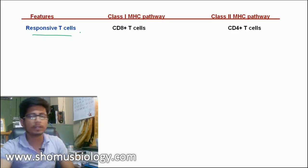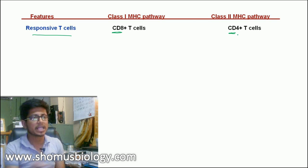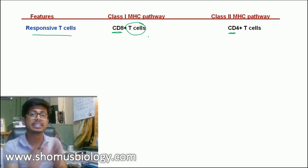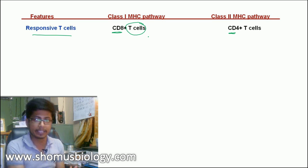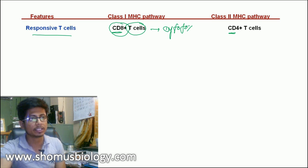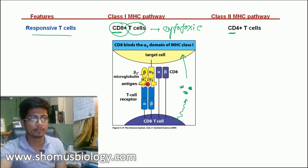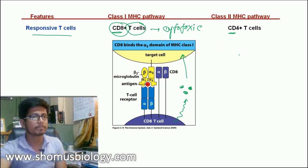The third difference is the cluster of designation, or CD, proteins on the surface. CD proteins are common surface proteins found on different types of immune cells. Among T cells, there are two varieties: CD4 T cells and CD8 T cells. MHC class 1 always interacts with CD8 T cells, which are cytotoxic in nature. CD8 T cells detect MHC class 1 presenting an antigen, engage via the T cell receptor, and then release perforins and granzymes. Perforins create pores in the target cell, and granzymes enter and kill the cell by apoptosis.